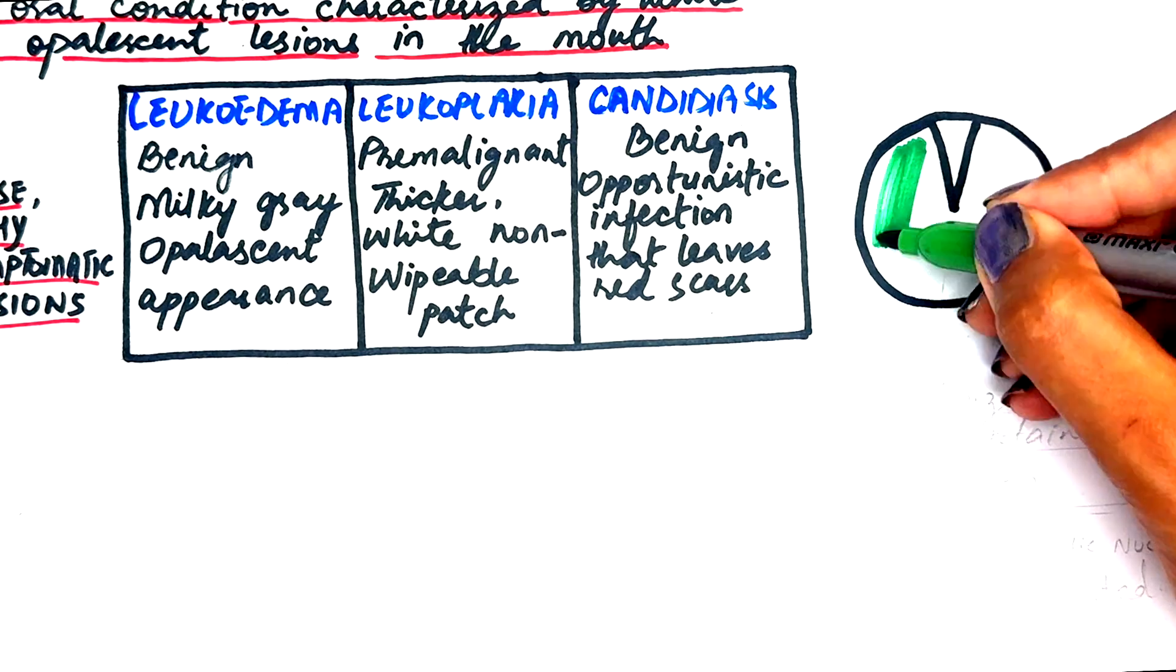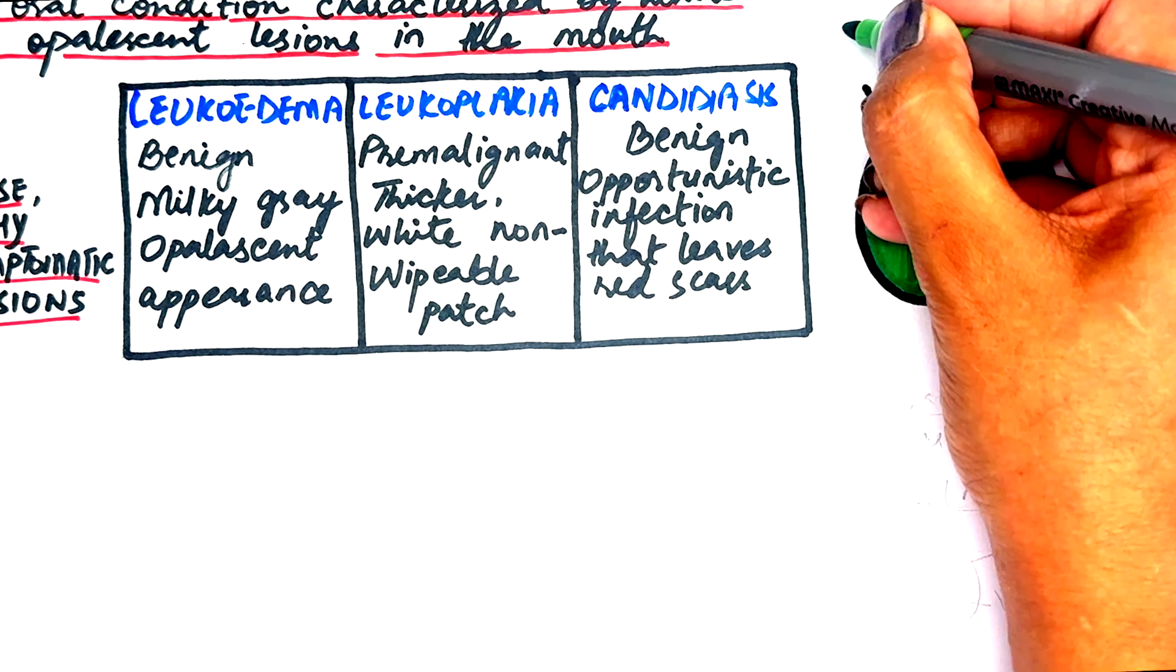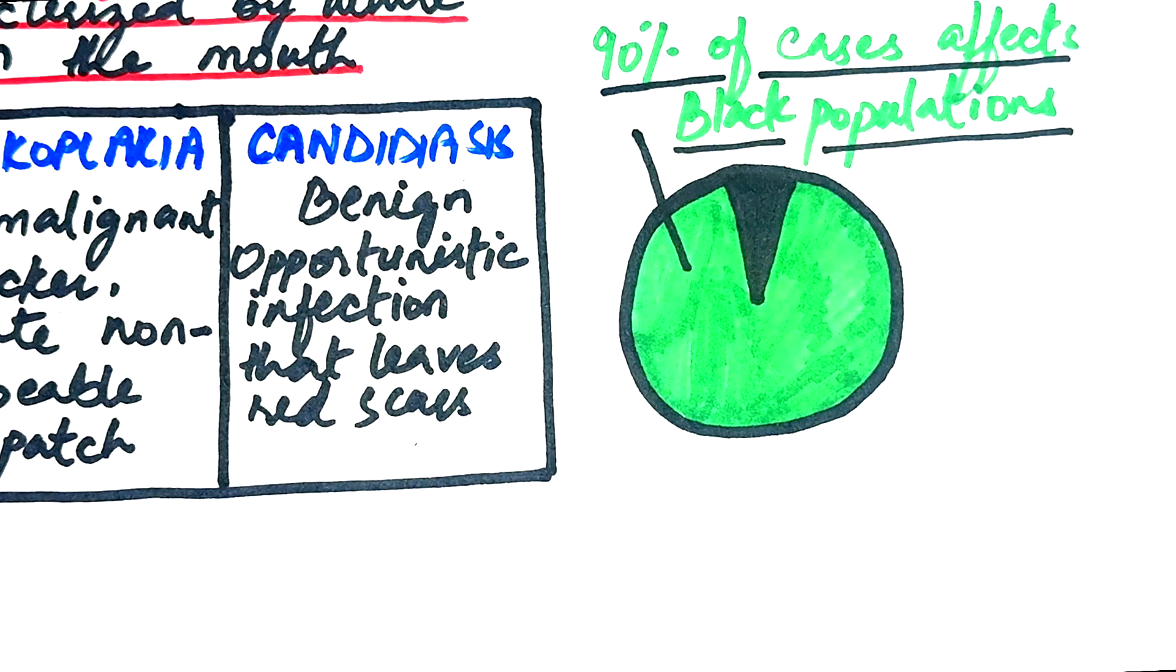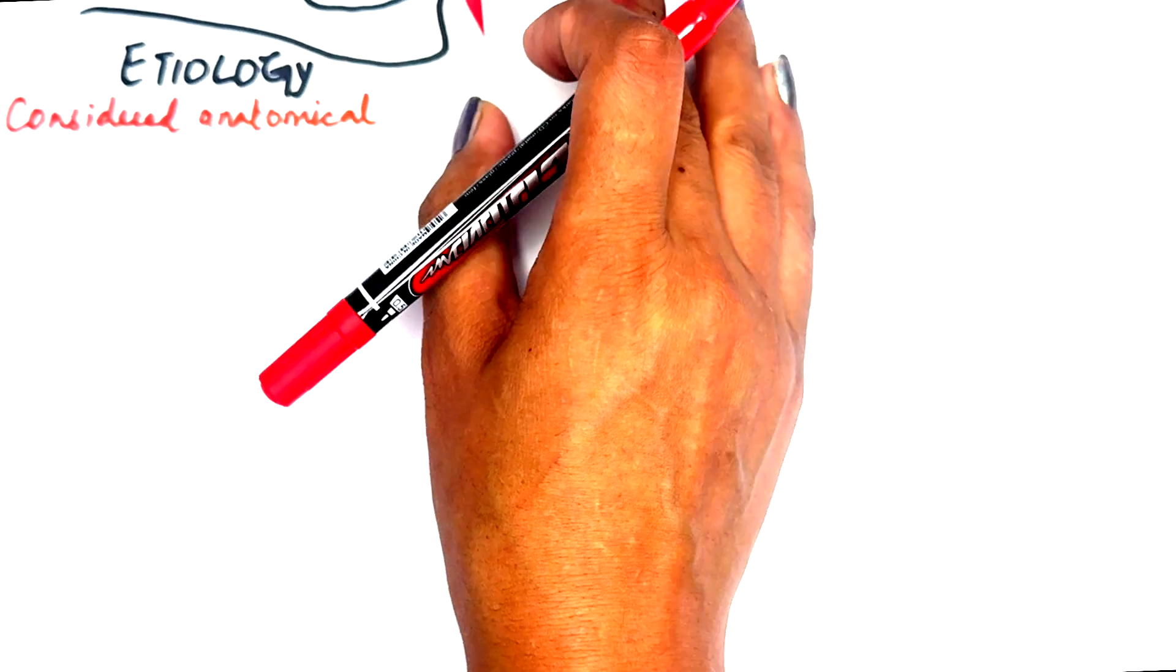Leucoedema is particularly common in darker-skinned individuals, with studies reporting up to 90 percent of cases in black populations. Since it is highly common, many researchers consider it a normal anatomical variation rather than a pathological condition.